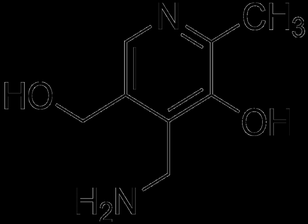Vitamin B6 refers to a group of chemically similar compounds which can be interconverted in biological systems. It is part of the vitamin B group of essential nutrients. Its active form, pyridoxyl-5-phosphate, serves as a coenzyme in some 100 enzyme reactions in amino acid, glucose, and lipid metabolism.